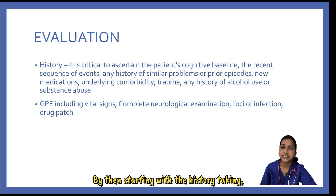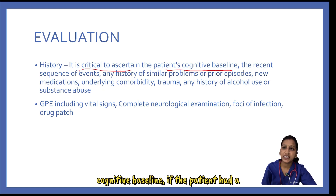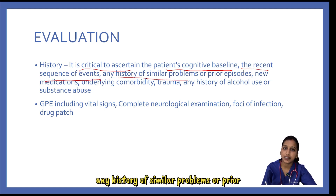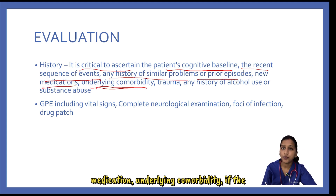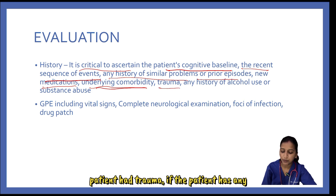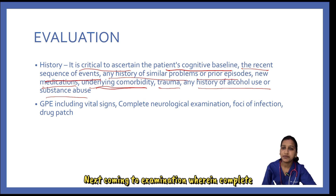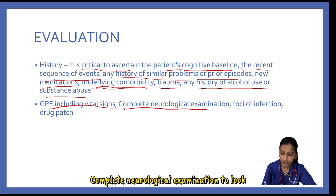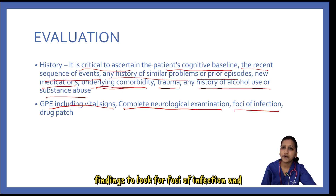Coming to evaluation, starting with history taking: it is critical to ascertain the patient's cognitive baseline, whether the patient had normal cognition, the recent sequence of events, any history of similar problems or prior delirium, any new medications or withdrawal of medication, underlying comorbidity, history of trauma, and any history of alcohol use or substance abuse. Examination includes complete general physical examination including vital signs, complete neurological examination to look for any focal deficit, foci of infection, and any drug patch over the body.